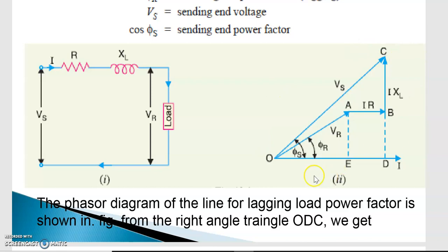The phasor diagram is OD. OD is taken as reference and the current I is represented as OA. The receiving end voltage Vr is leading the load current I, since we are considering lagging power factor. The angle between Vr and I is φr, so power factor is cos φr. The IR drop is the loss due to resistance, and IXL is the loss due to inductance — XL is purely inductive so this component is at 90 degrees. The receiving end voltage plus these two losses gives the sending end voltage Vs.